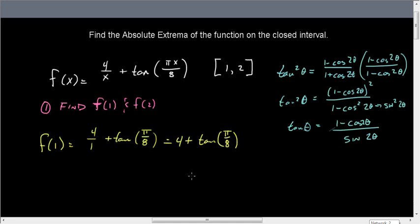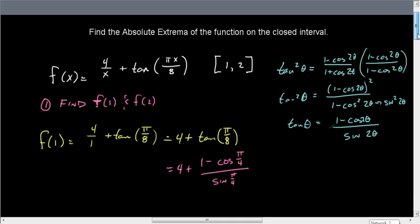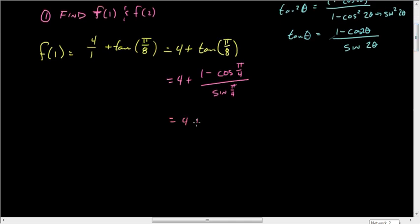So that's going to give me 4 plus tangent, remember, is sine over cosine. However, we now have this. So we have 1 minus cosine of pi over 4 divided by the sine of pi over 4. When we evaluate these, we're going to get 4 plus 1 minus the square root of 2 over 2 divided by the square root of 2 over 2, which gives us 4 plus 2 over root 2 minus 1.